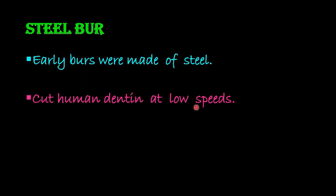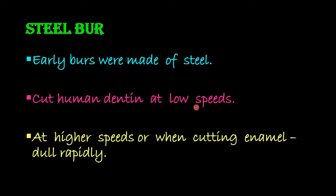These steel burs cut human dentin well at low speed, but at higher speed or while cutting enamel they get rapidly dull because of the increased heat and vibration production.